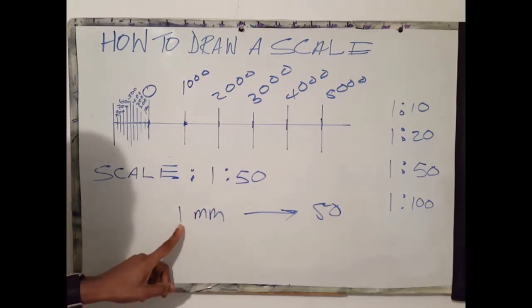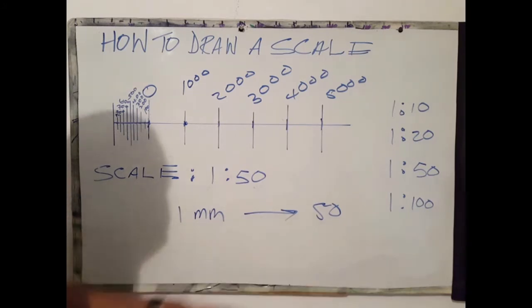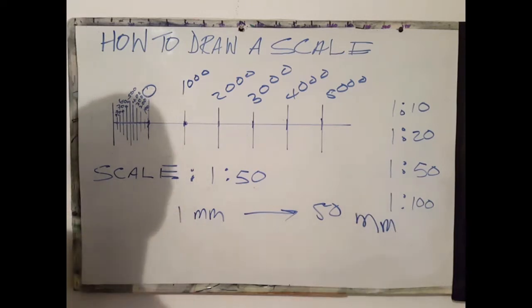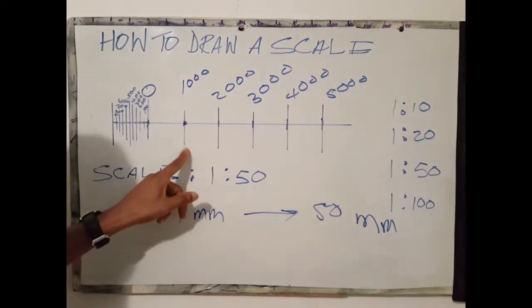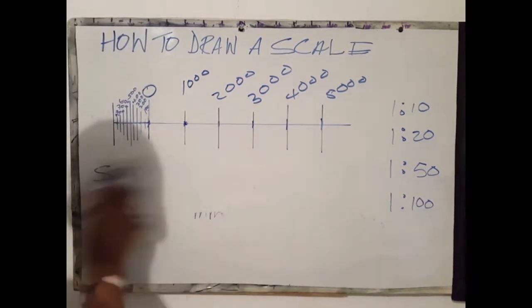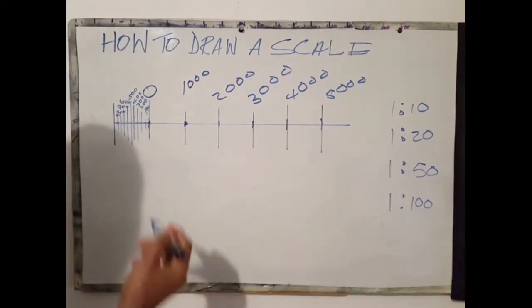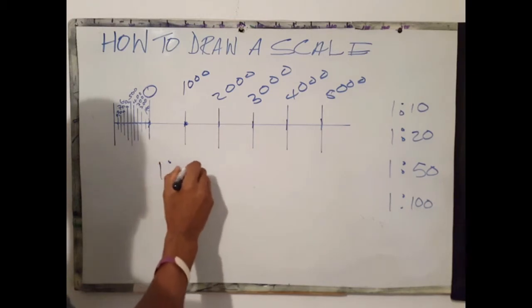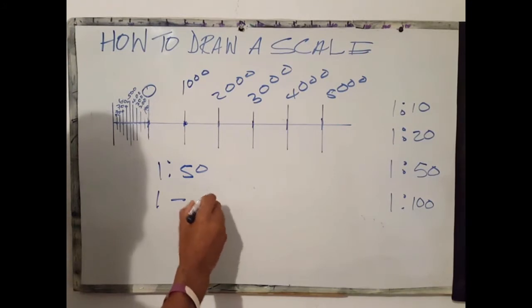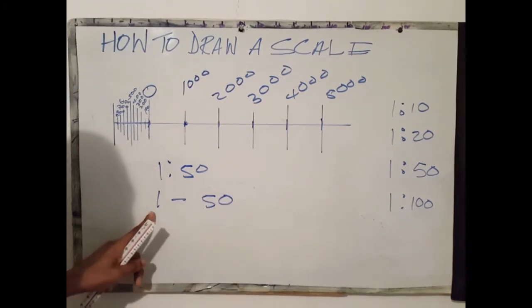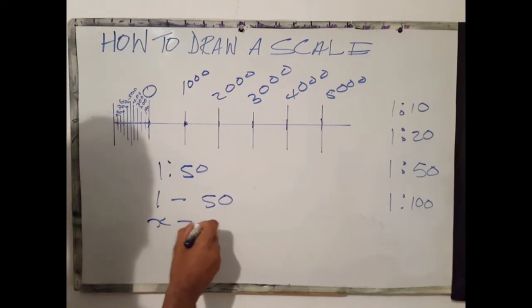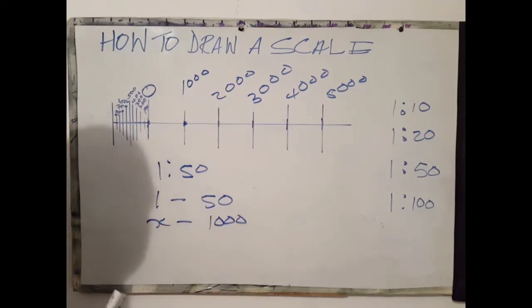We can reduce a drawing by proportion to fit onto the paper. In this case, 1 mm maps onto 50 mm in reality. How do we calculate this and determine these increments? On a 1 to 50 scale, 1 mm maps onto 50 mm. We need to know how many mm maps onto 1000 mm.